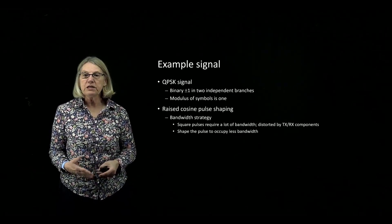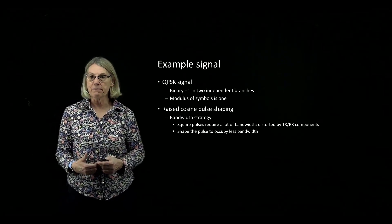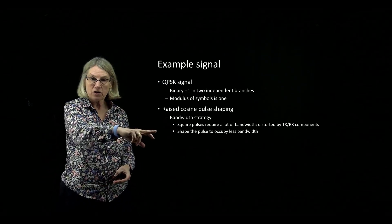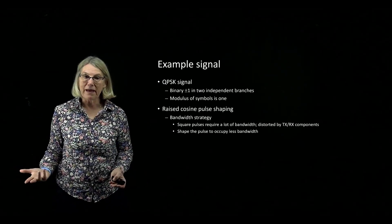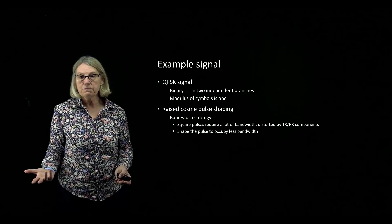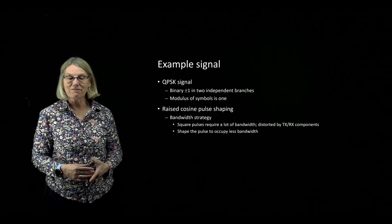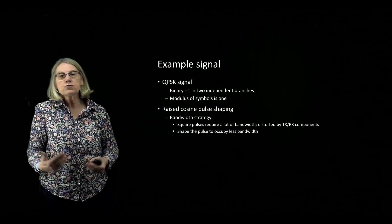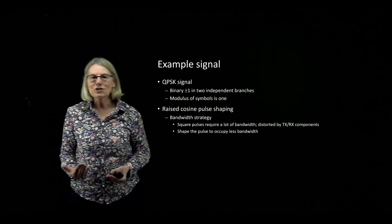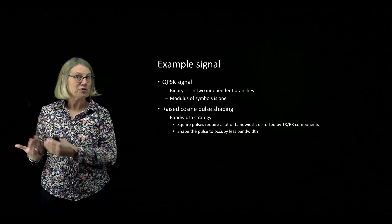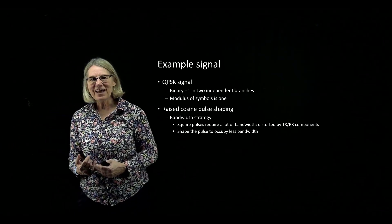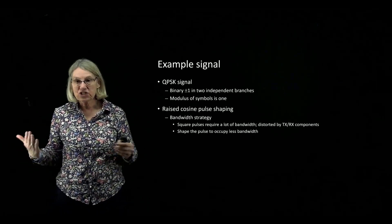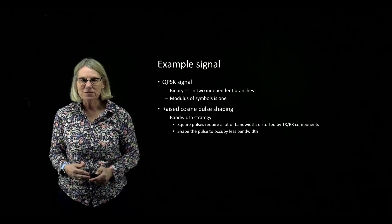The shaping I'm going to be using is raised cosine pulse shaping, which is typically used as a bandwidth strategy. If I use square pulses they require a great deal of bandwidth, and this bandwidth may exceed that available in various components in the transmitter and receiver, which would introduce distortion. So in order to avoid worse distortion I use a pulse shaped signal, because the shaping makes it occupy less bandwidth.